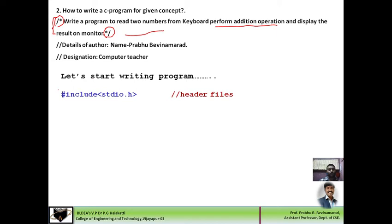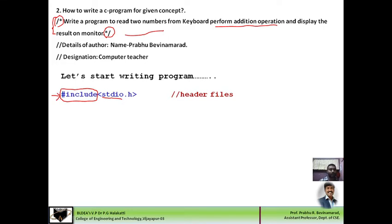First, I write an instruction for inserting a header file. This section is called the link section. I would like to link the stdio.h header file in this program. stdio.h is a library file containing standard input-output functions used for reading data from the keyboard and displaying information on the monitor. The hash include is a preprocessor directive, which informs the compiler before program execution starts and supplies predefined information to the compiler.